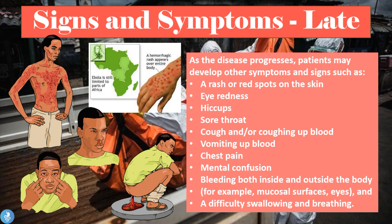Continuing with signs and symptoms, the late signs and symptoms are more specific to the virus itself. As the disease progresses, patients may develop a rash or red spots on the skin — this is what the hemorrhagic rash looks like and it can affect the entire body. Patients will also develop eye redness, hiccups, and a sore throat.